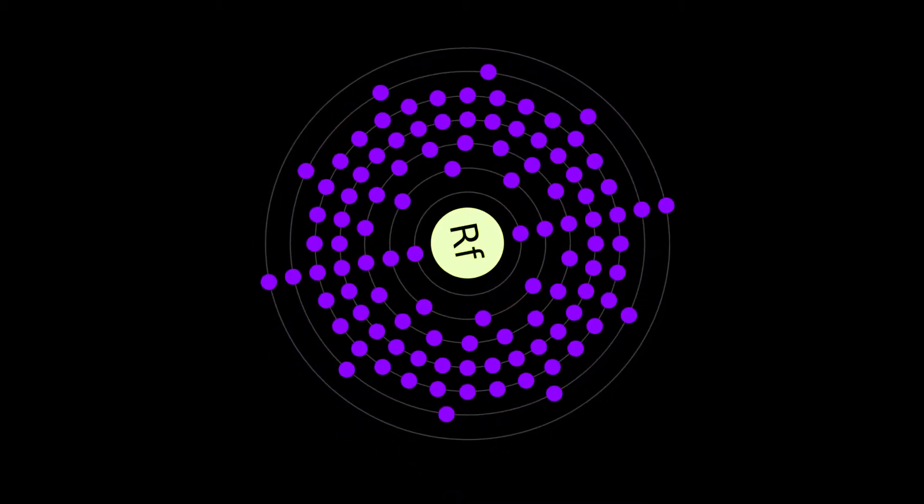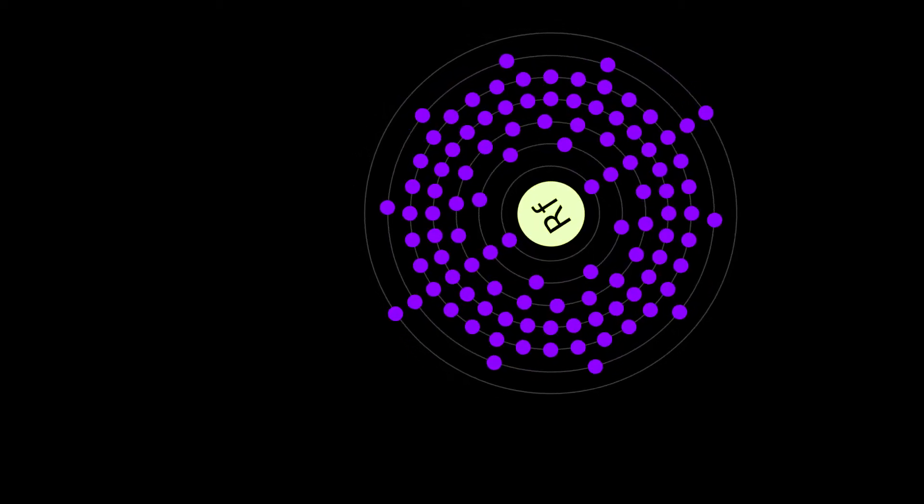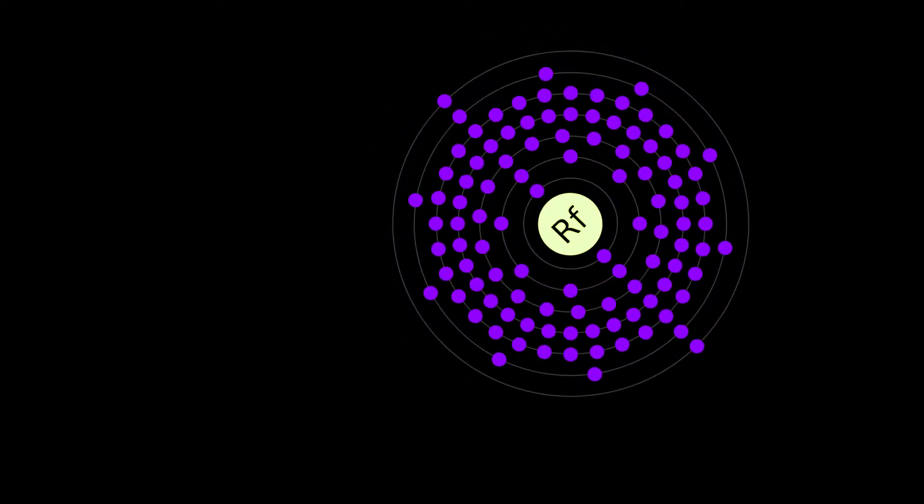Rutherfordium is a synthetic chemical element with symbol RF and atomic number 104, named after physicist Ernest Rutherford.